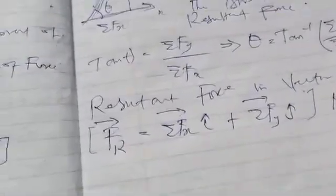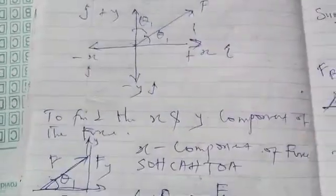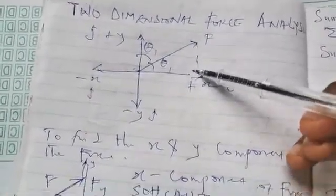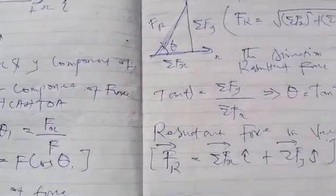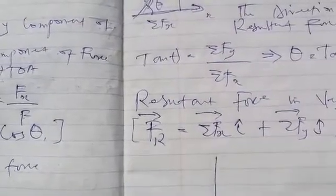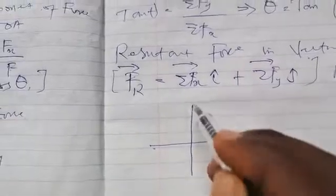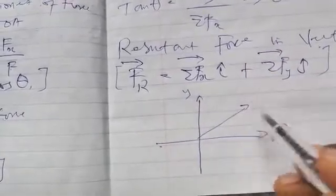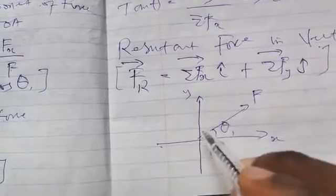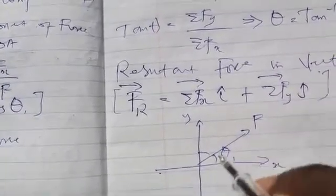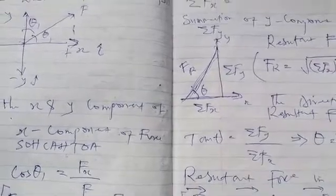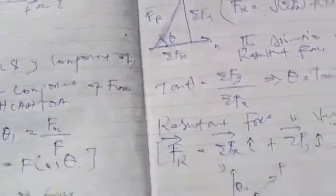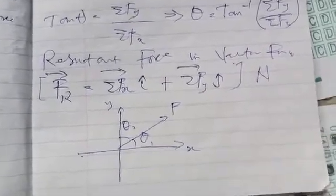Now I'm going to take you through a very useful shortcut for analyzing this. I've told you that all you needed to do was join the lines together to obtain a right-angle triangle, pull it out, apply SOH-CAH-TOA, and get your F_x and F_y. But what happens when you have numerous forces? I will teach you a very sweet shortcut. I have the same diagram: this is my X component, this is my Y component, and I have a force F inclined at theta 1 and theta 2.